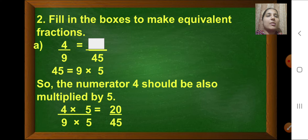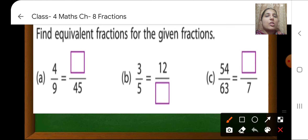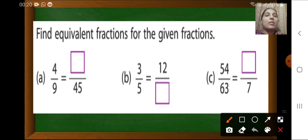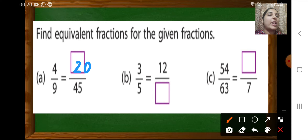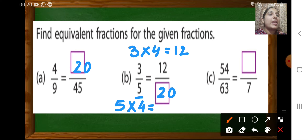Let's see some more examples. In example A, we multiplied by 5 to get 20. In example B, 3 is multiplied by 4 to get 12, so we also multiply the denominator 5 by 4 to get 20. The blank space is 20.